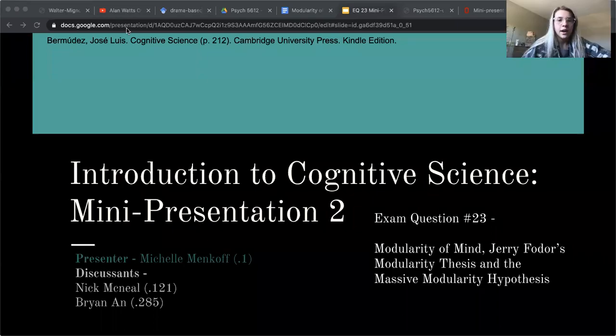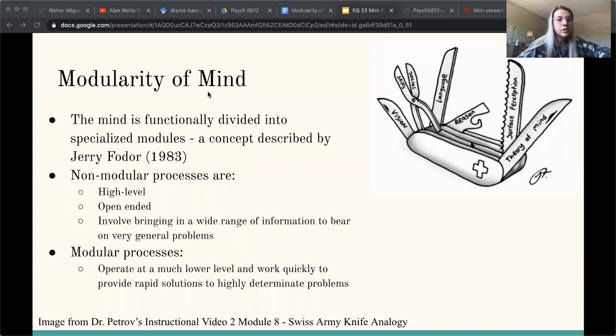Hi everyone, I'm Michelle and I'm going to be doing exam question 23 to talk about the modularity of mind and all of its components. First, the modularity of mind—I want to talk about how the mind is functionally divided into specialized modules, which is a concept described by Jerry Fodor. To the right we have an image of a Swiss Army knife.